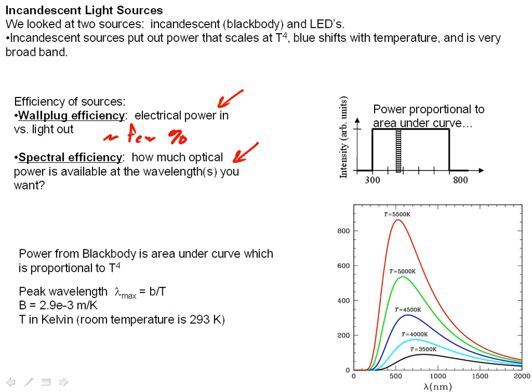In fact, green light is going to interfere with the signal you want to detect. You don't want to have green light in your source. Unfortunately, blackbody sources put out a very broad range of wavelengths. This can be seen in the figure in the lower right-hand corner.